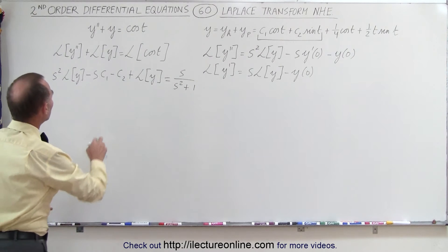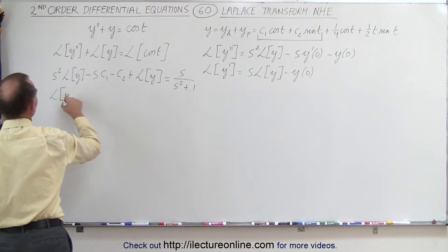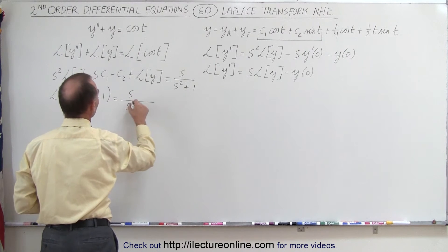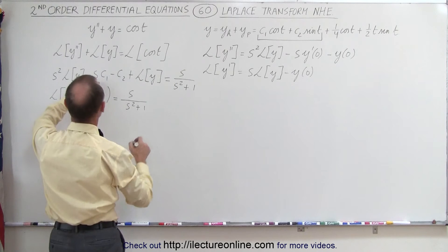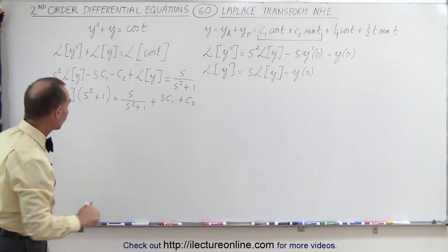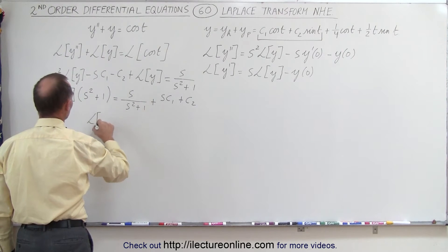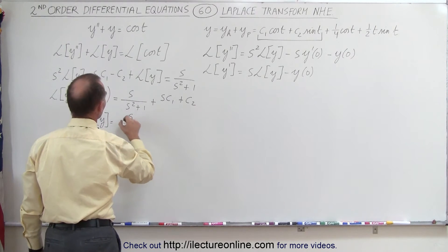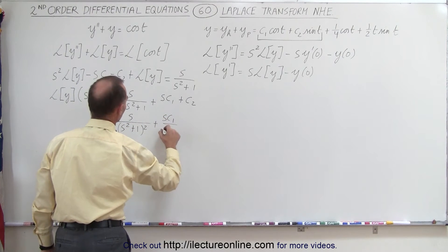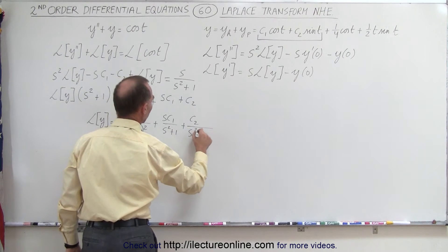We move the constants to the right side and factor out the Laplace transform of y. On the left side we get L{y} times (s squared plus one), which equals s divided by (s squared plus one), plus s·C1 plus C2. Dividing both sides by (s squared plus one), we get L{y} equal to s over (s squared plus one) squared, plus s·C1 over (s squared plus one), plus C2 over (s squared plus one).